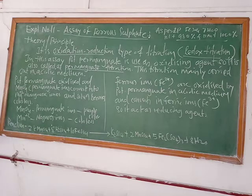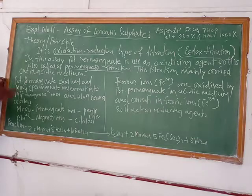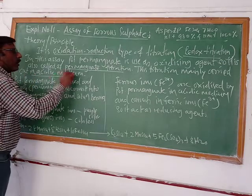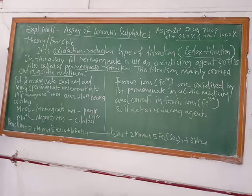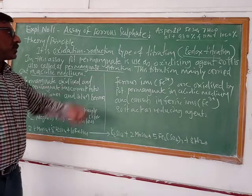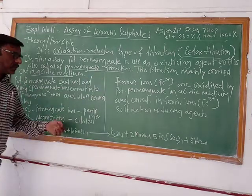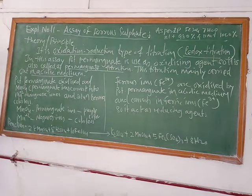In this type of titration, acidic medium is used. So here also, we perform this assay of ferrous sulfate in acidic medium. In this assay, potassium permanganate acts as an oxidizing agent and ferrous sulfate acts as a reducing agent. Oxidation-reduction reaction is going on simultaneously.